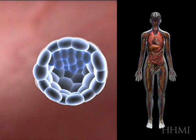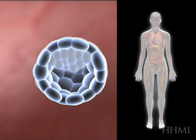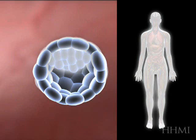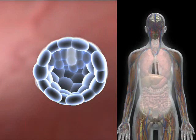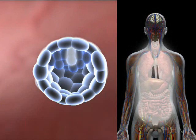Here you'll see that the inner cell mass gives rise to the entire adult animal — in this case, a human. This same process would occur in a mouse, as we'll see a bit later.